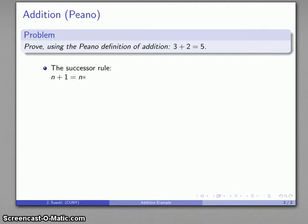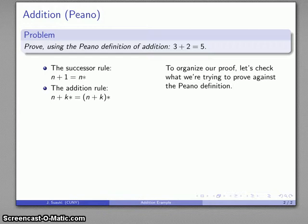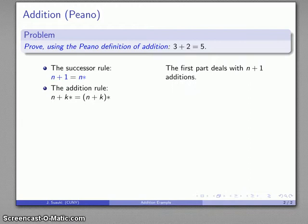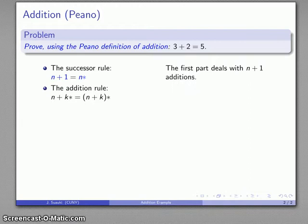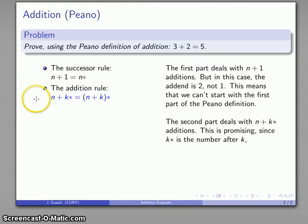And again, it may help to have our Peano definitions for reference. Again, remember, part of the reason for proof in mathematics is it reminds us of things that we should know. And in this particular case, the Peano definition, we have two rules. The successor rule, n plus 1, is the number following n. And the addition rule, n plus k star, is the number following n plus k. And let's organize our proof by checking what we're trying to prove against our Peano definition. So we want to prove using the Peano definition. And our first rule deals with addition of n plus 1. And the thing to notice here is what we're adding is not 1, but it's 2. So we can't use the first rule, at least not directly.